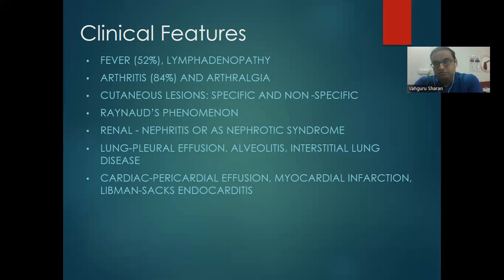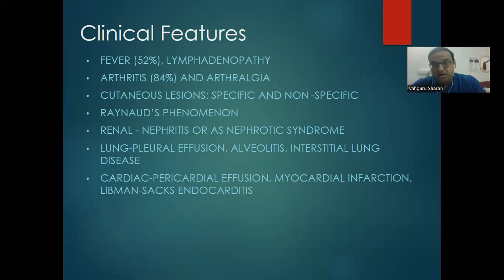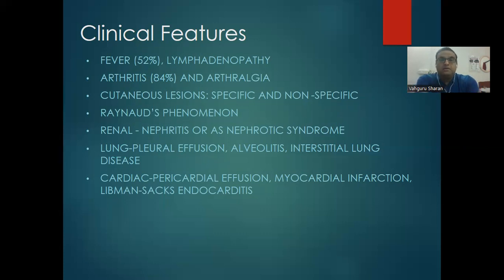Raynaud's leads to significant morbidity. The mortality part is taken care of by renal involvement — it could be glomerulonephritis or nephrotic syndrome. When the kidney is involved in SLE, patients have prolonged morbidity with renal failure being very common. Lung involvement includes pleural effusion, alveolitis, and interstitial lung disease. Serositis — involving the pleura and pericardium — is a very important feature of SLE and part of the diagnostic criteria.